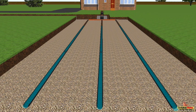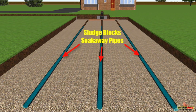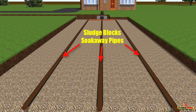As the sludge makes its way deeper and deeper into the soak away pipes, it completely clogs up the entire system, stopping that wastewater from soaking away naturally into the soil and blocking up your entire soak away system.